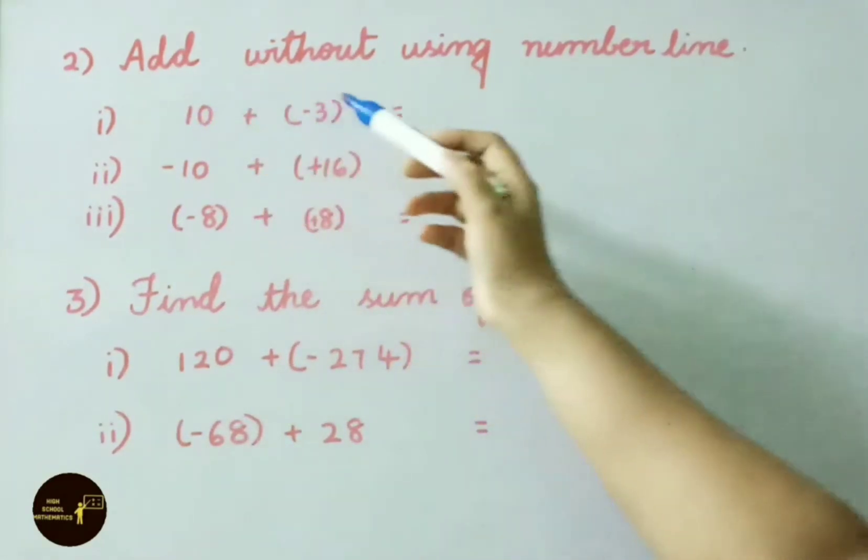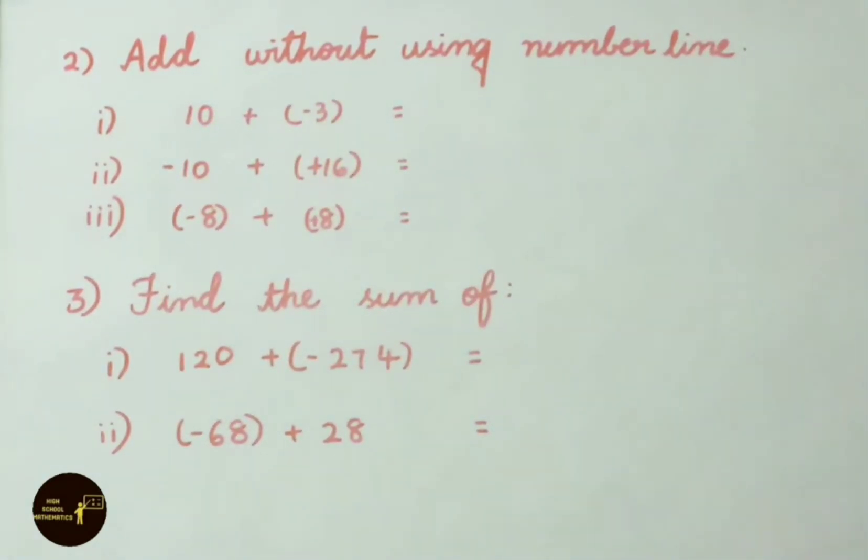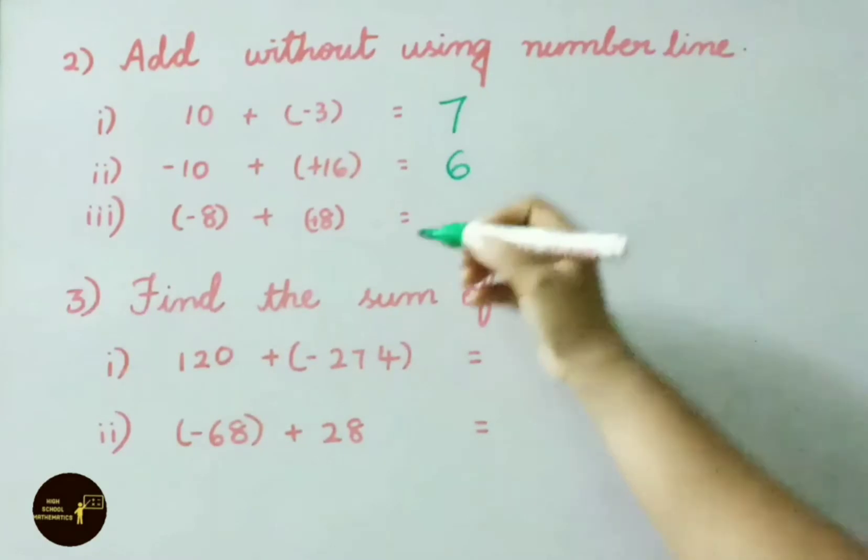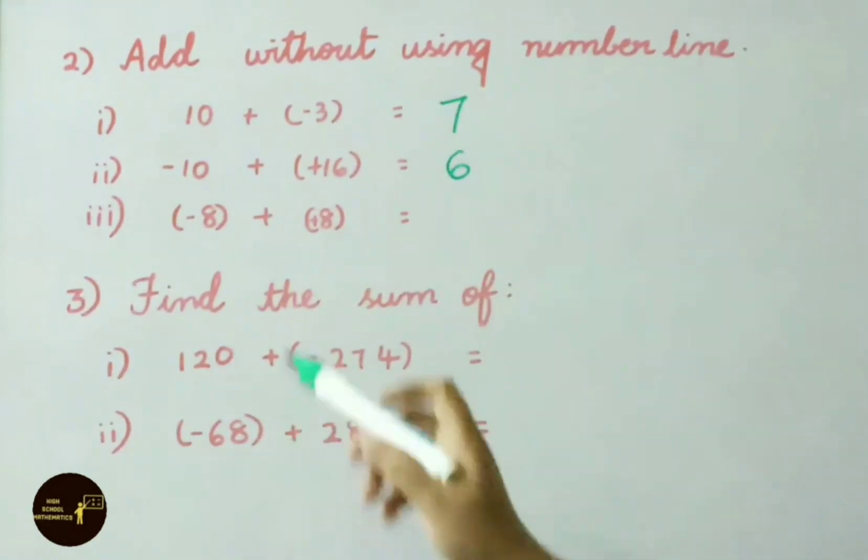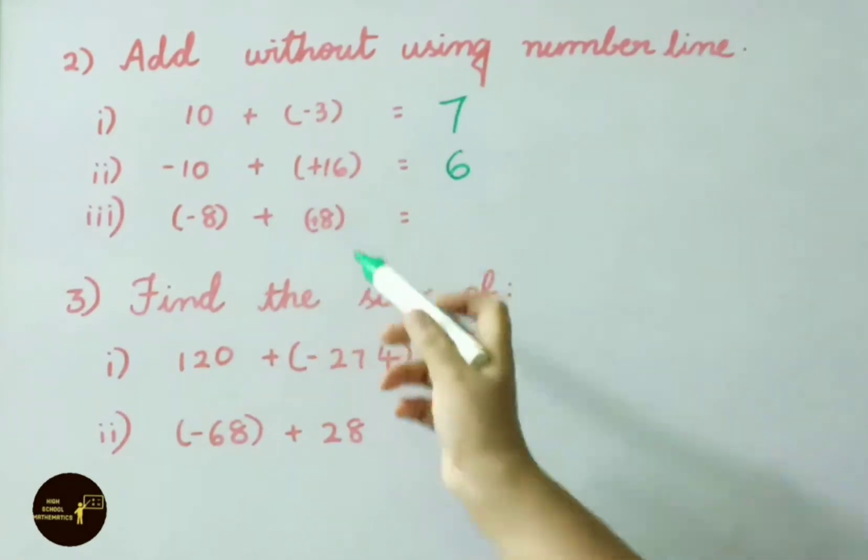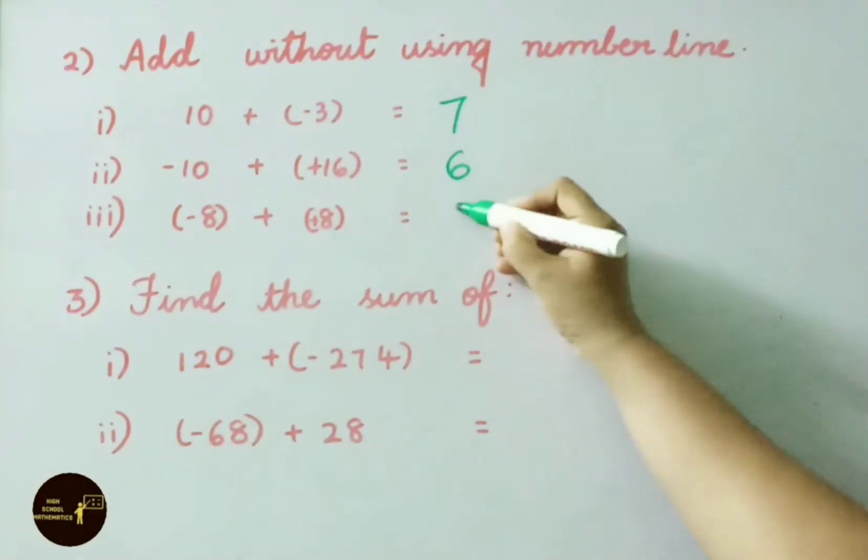See question number 2. Add without using number line. See the first question 10 plus minus 3. So 10 minus 3 is 7. See the next question minus 10 plus 16. Opposite sign is there. Here also we shall do subtraction. 16 minus 10 answer is 6. See the next question minus 8 plus 8. So minus 8 plus 8 opposite sign is there. We have to do subtraction. So 8 minus 8 answer is 0.